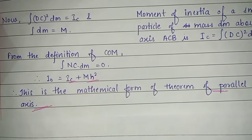About axis MOP, I₀ = ∫(DO²) dm. After solving and integrating, we get I₀ = Ic + mh². This is the mathematical form of the theorem of parallel axis, same as given in the textbook.